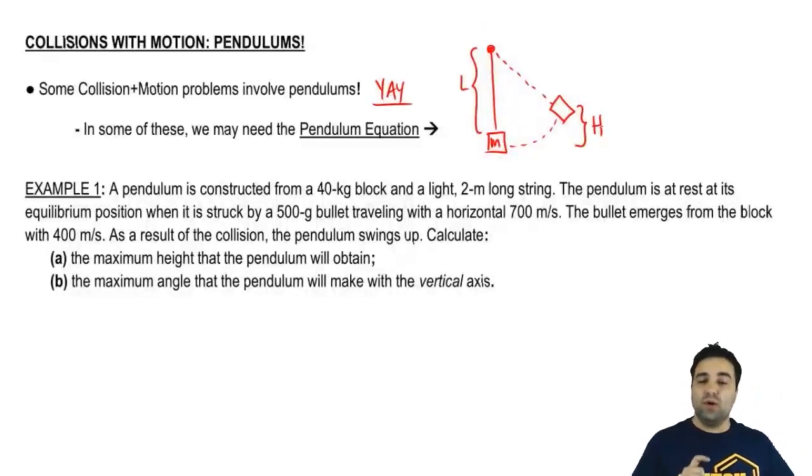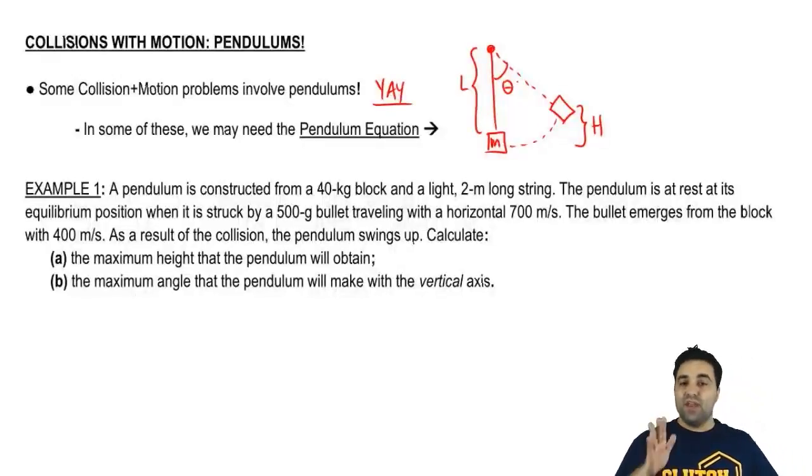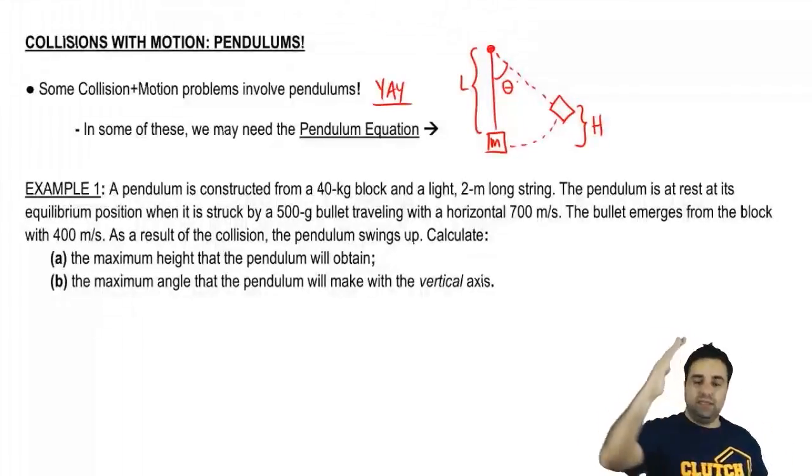And this distance here is the height gained by the pendulum H. And what we want to do is we want to have a relationship between L, the length of the pendulum H, the height gained, and the maximum angle that it makes with the vertical. When you have pendulum problems, the angle that matters is the angle with the vertical because the pendulum moves around the vertical axis like this.